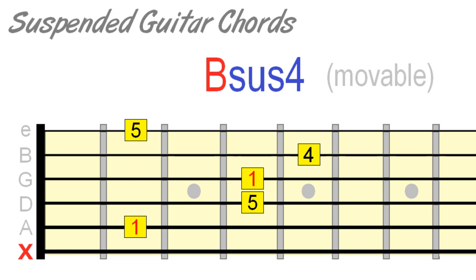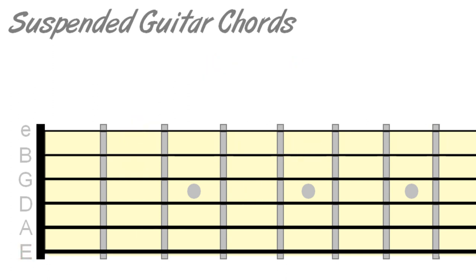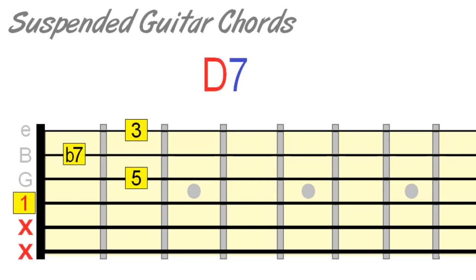This alternating movement between major and suspended fourth is used in many classical and popular pieces. For 7 sus4 chords — which is basically a dominant 7th chord with a suspended 4th — we again simply raise the 3rd of those familiar dominant 7th shapes to a 4th.